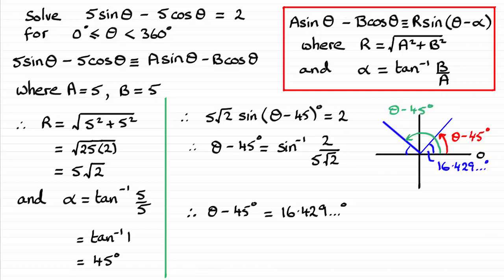When it comes to our second solution, it's going to be from here, going round here, anticlockwise to this line. This is another possible theta minus 45 degrees. So this one here is our red one. And to get the green one here, all I've got to do is 180 degrees minus the 16.429 degrees. If you do that, you should find you get 163.570 and so on degrees. That's our green one, for theta minus 45 degrees.